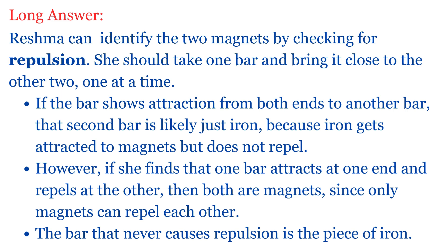Long answer: Reshma can identify the two magnets by checking for repulsion. She should take one bar and bring it close to the other two, one at a time. If the bar shows attraction from both ends to another bar, that second bar is likely just iron, because iron gets attracted to magnets but does not repel. However, if she finds that one bar attracts at one end and repels at the other, then both are magnets, since only magnets can repel each other. The bar that never causes repulsion is the piece of iron.